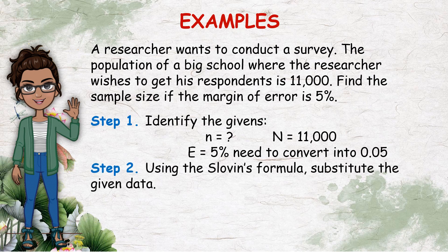Step 2 is to use the Sloven's formula and substitute the given data. So we can have n equals 11,000, which is the population, divided by 1 plus 11,000 multiplied by 0.05 or the decimal form of E or the margin of error, which is 0.05 squared.